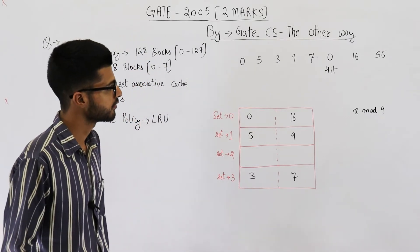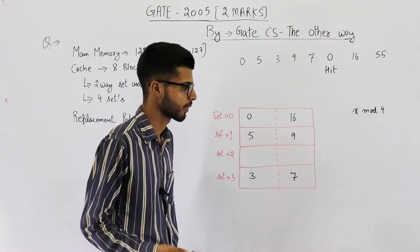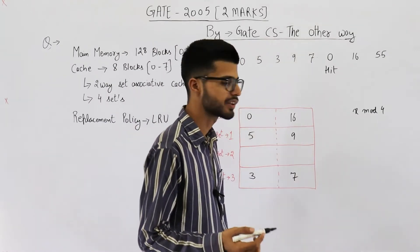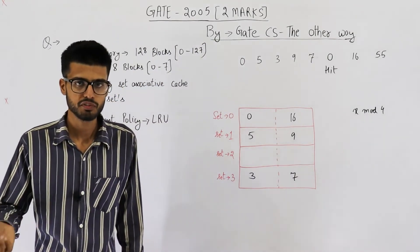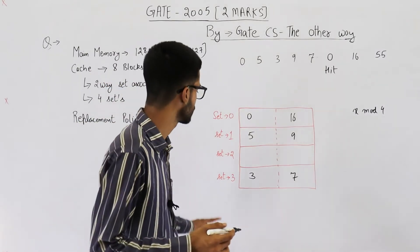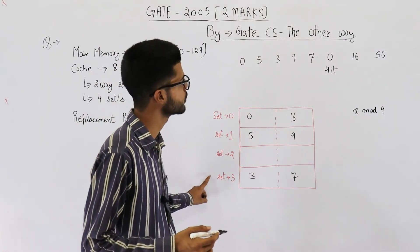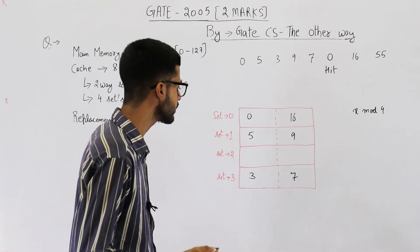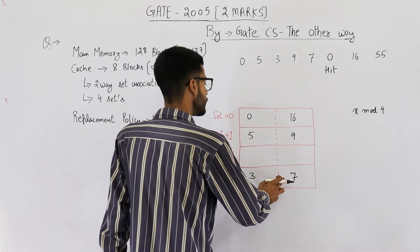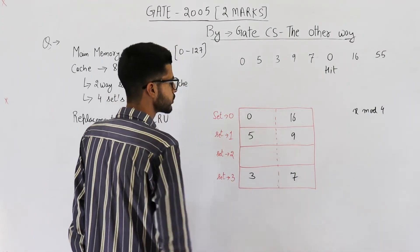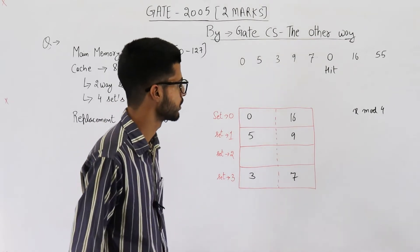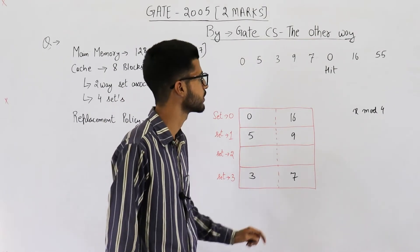Now, you see, 55 mod 4 will be, so, 56 mod 4 is 0, 55 mod 4 will be 3. So, 55 will be mapped down to set number 3. That means, now we need to replace any one of these two. Let's see which one will be replaced. Is it 7 or is it 3? From here, from here, you look back into time and find the least recently used one.